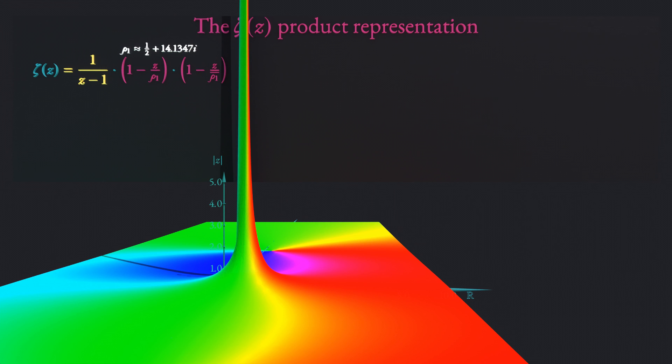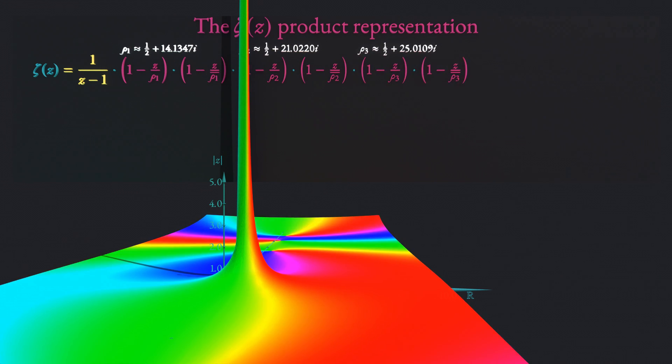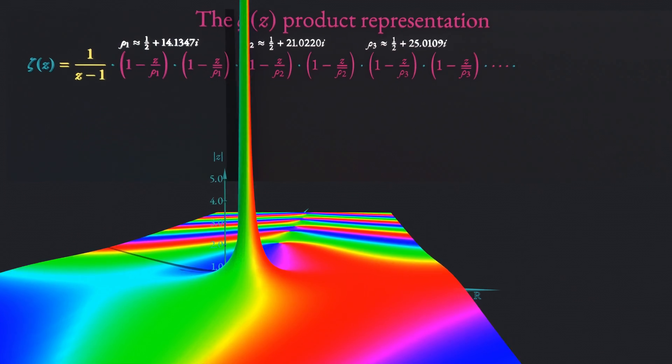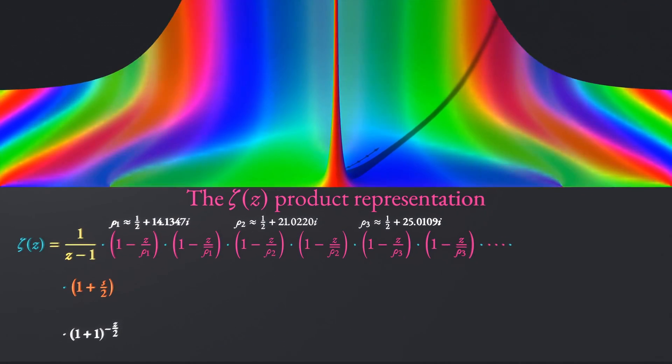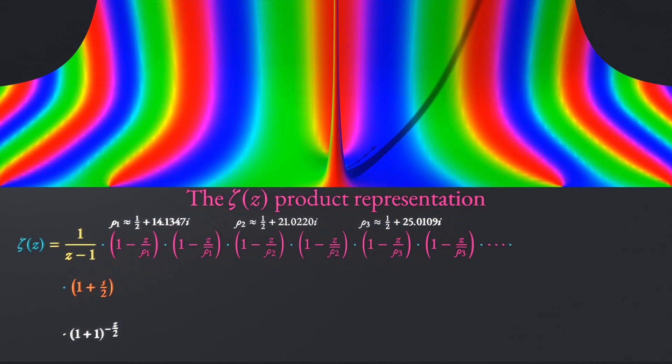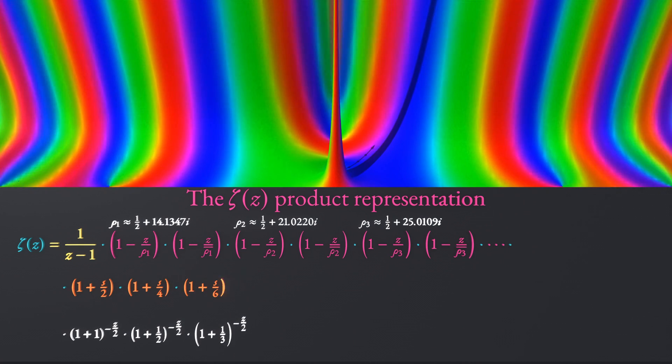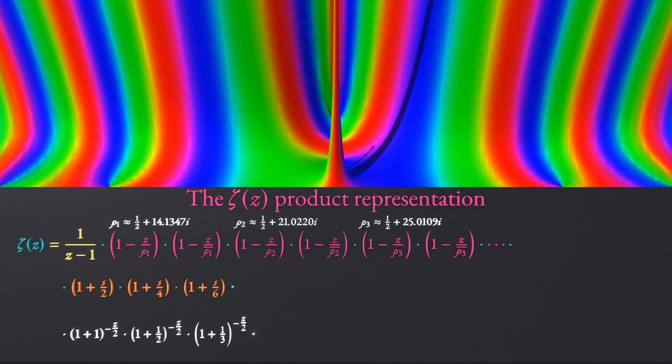The following animation shows how the zeta function is approached when more and more zeros are taken into account. The first step is a function that only consists of a pole at z equal to 1. Thereafter, the non-trivial zeros are added step by step. When the terms for the trivial zeros are added, a few additional terms are introduced for convergence. They do not add special points and they are unimportant for the calculation of the psi function later on.